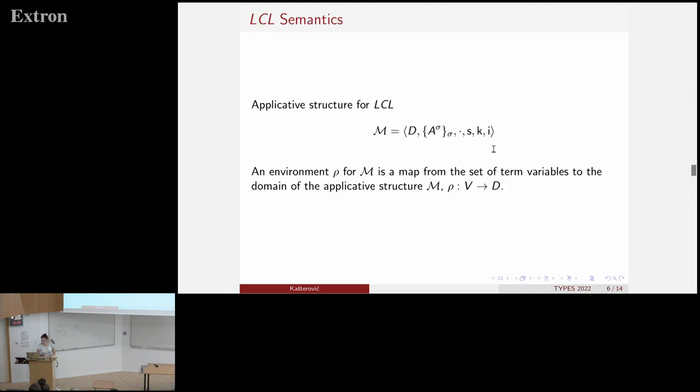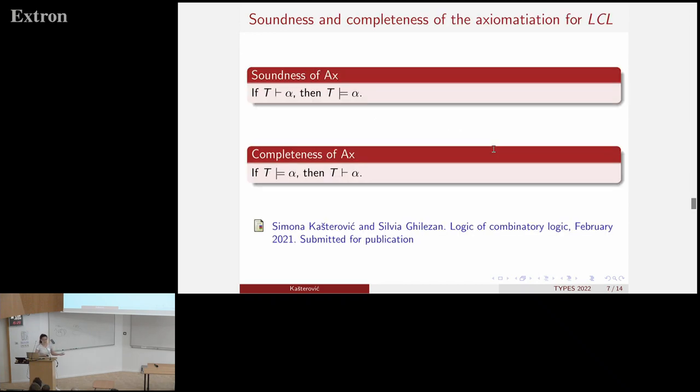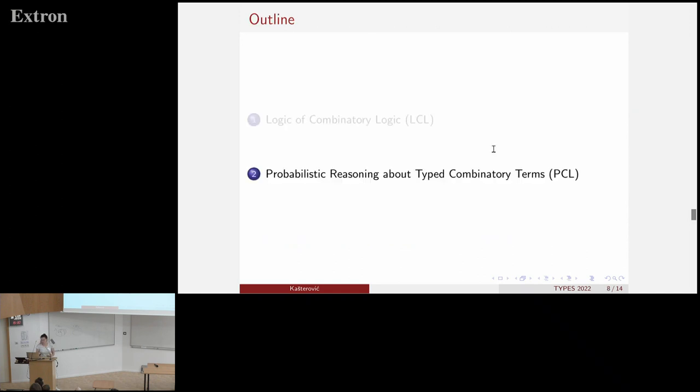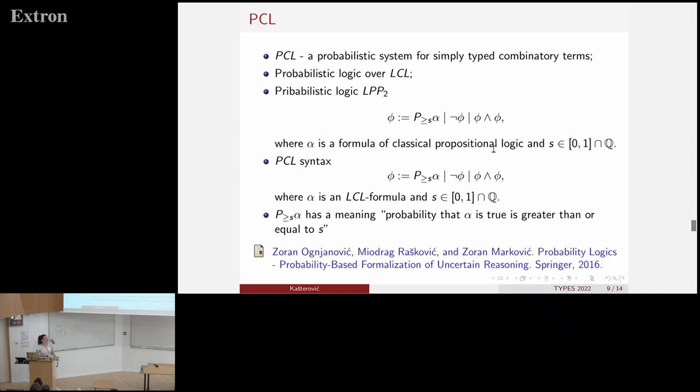What are the main results of this part of the work? Well, we have proved that the axiomatization I presented is sound and complete with respect to the semantics I just defined. And all this was just the introduction for the second part. So we needed these results in order to define something that we call here PCL, that is a system for probabilistic reasoning about type terms. And it actually presents probabilistic extension of LCL.